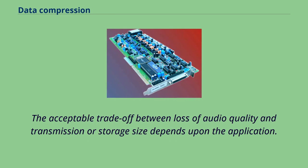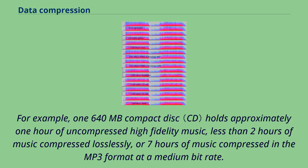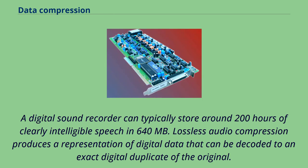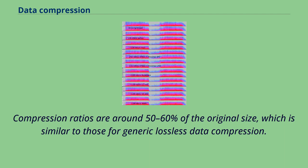The acceptable trade-off between loss of audio quality and transmission or storage size depends upon the application. For example, one 640 MB compact disc holds approximately one hour of uncompressed high-fidelity music, less than two hours of music compressed losslessly, or seven hours of music compressed in the MP3 format at a medium bit rate. A digital sound recorder can typically store around 200 hours of clearly intelligible speech in 640 MB. Lossless audio compression produces a representation of digital data that can be decoded to an exact digital duplicate of the original. Compression ratios are around 50–60% of the original size, which is similar to those for generic lossless data compression.